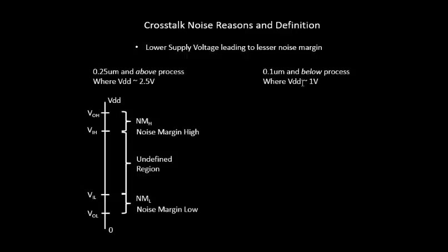There are other reasons as well to reduce the supply voltage. One of the major reasons is power — reducing the voltage reduces the amount of power dissipation in that particular circuit, including static, dynamic, and all kinds of power dissipation. There are several exhaustive reasons for having a lower supply voltage for 0.1 micron and below processes, and power is one of those reasons.